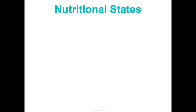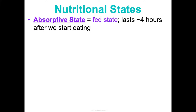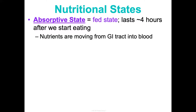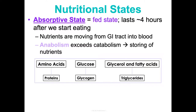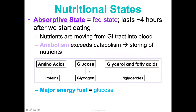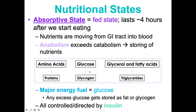Our last topic is nutritional states. The absorptive state is your fed state, lasting about four hours after you start eating. Nutrients are moving through your GI tract and being absorbed into your blood, and there's more anabolism than catabolism happening — we're storing nutrients and building molecules we need. Amino acids get built into proteins, glucose gets stored as glycogen, and glycerol and fatty acids get stored as triglycerides. Glucose is mainly fueling your body at this point, and all of this is controlled by insulin.